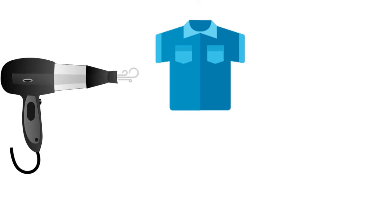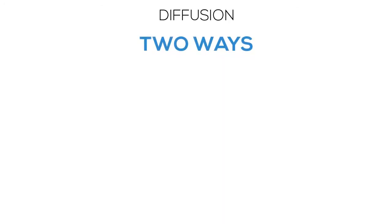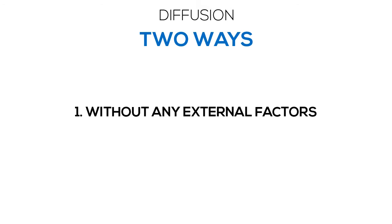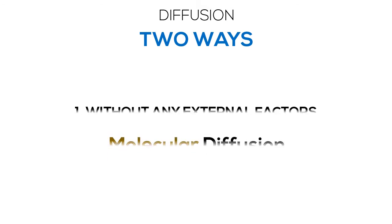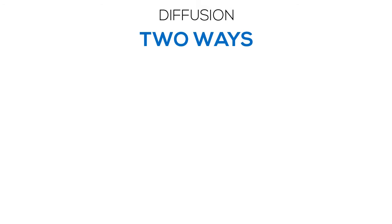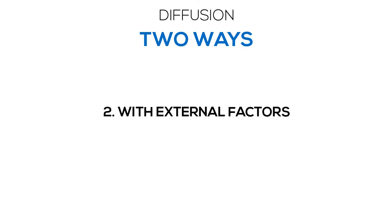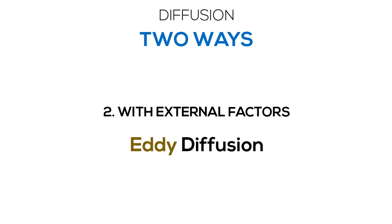This diffusion can take place in two ways. Without any external factors affecting the diffusion process, which is called molecular diffusion. Or with external factors such as wind affecting the diffusion process, which is called eddy diffusion. Out of the two, eddy diffusion has a higher rate of drying.